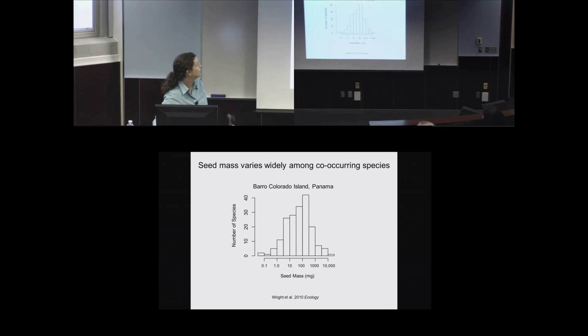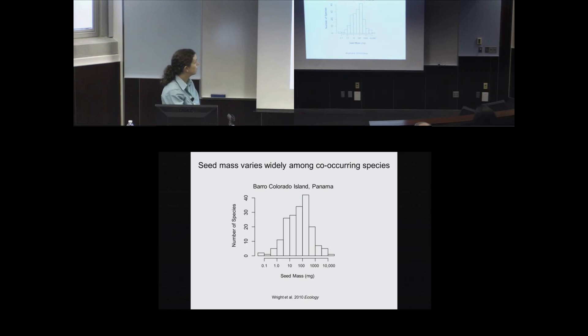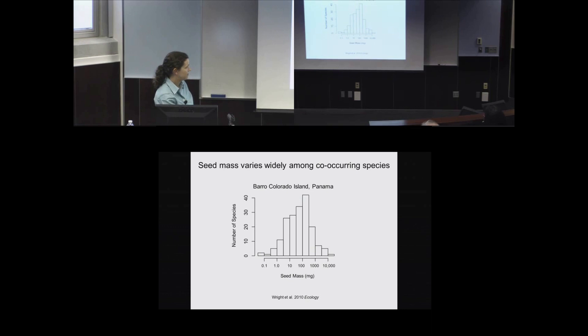These are seeds of woody plant species in one family on Barro Colorado Island, Panama — the legume family, which happens to have one of the larger ranges of seed size. Clearly, one of the questions is how these different seed size strategies coexist in the community. The seed size variation is larger than just within that family if you look in the forest as a whole.